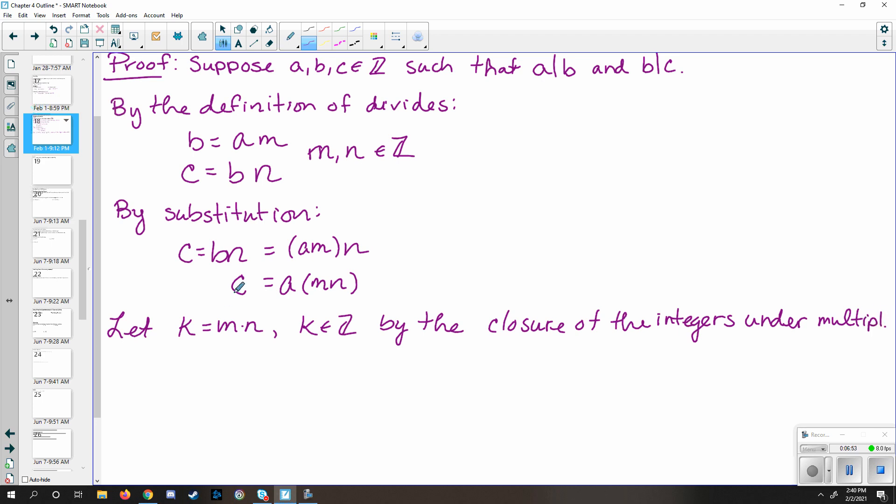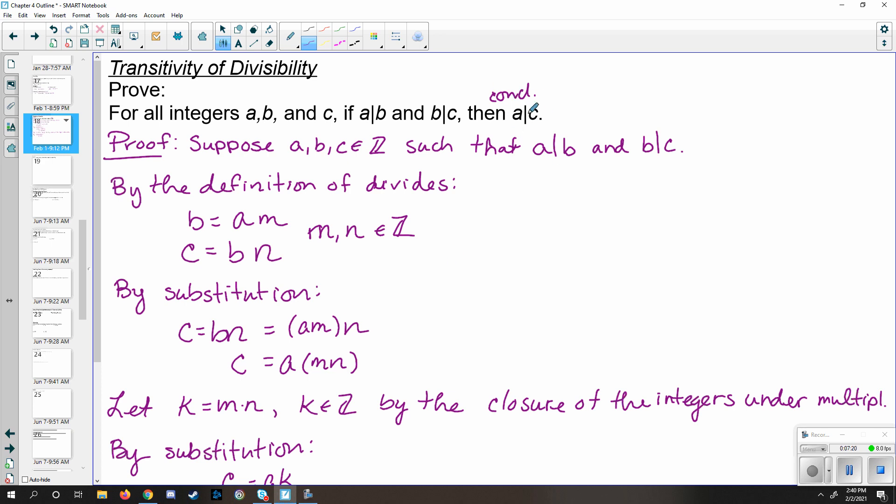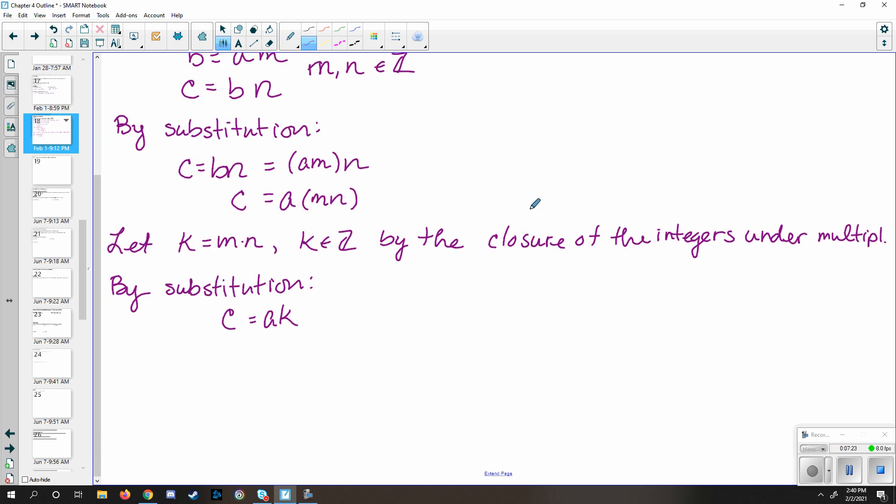And we know that k is an integer by the closure of the integers under multiplication. At this point, you're in the home stretch. Rewrite this and see if it now fits back into the definition of divides for our conclusion. So one last time, by substitution, we know that c is equal to a times k. And since we know that k is an integer, we've verified it here. That's the definition of divides, which shows us that a divides c. So just make one more sentence to kind of wrap that thought up.